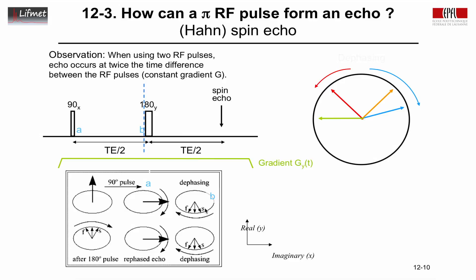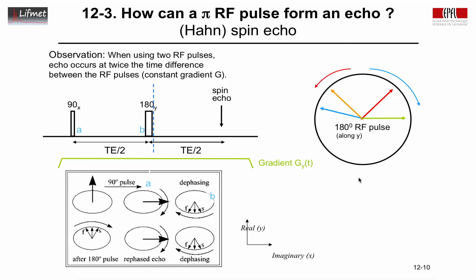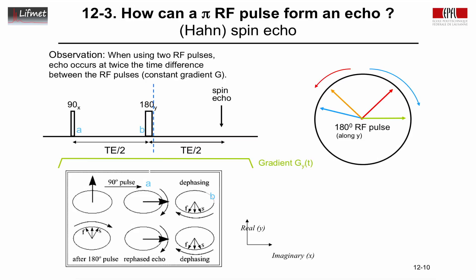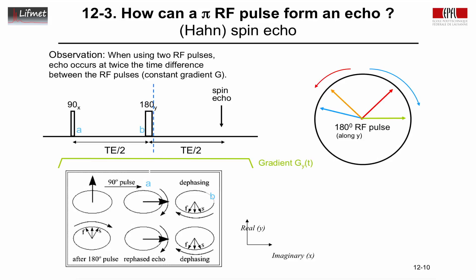Now we apply the 180-degree pulse along the Y axis. It flips the X component of the magnetization. An RF pulse that rotates around the Y axis will leave the Y component intact. Before the pulse, the vectors are spread. After the pulse, the X component has changed sign for all vectors: orange and blue move to the right, red and green to the left — now red and green are on the right and orange and blue on the left. The Y components are the same, but the X components have changed sign.